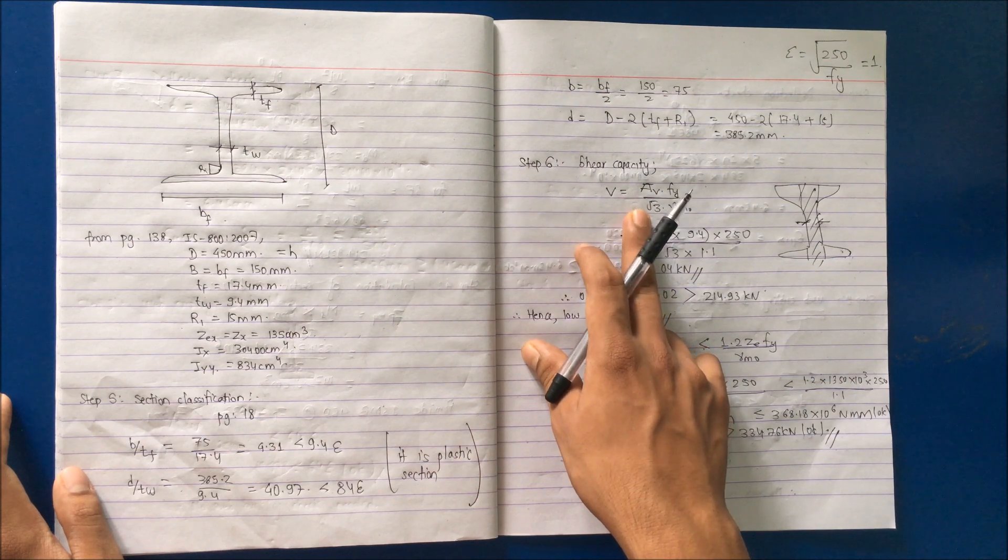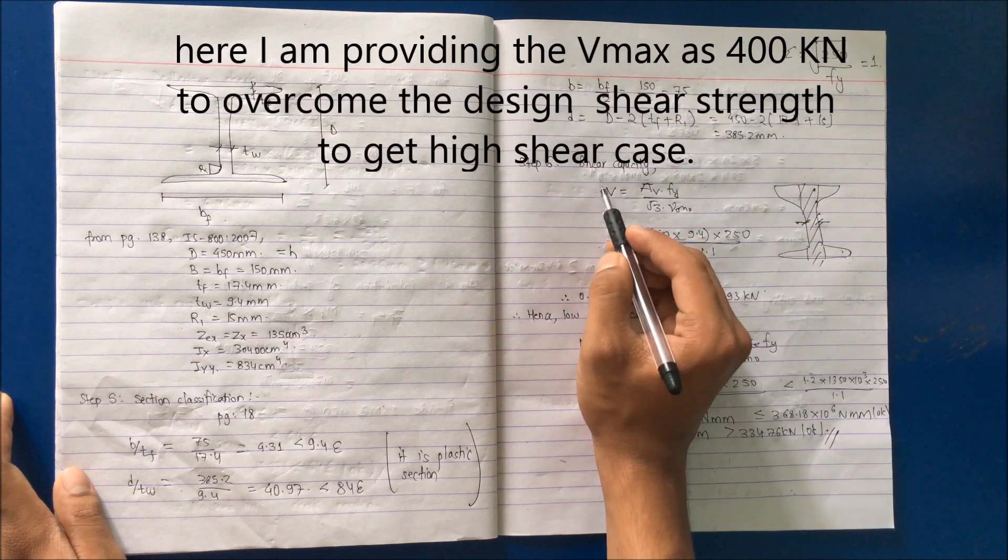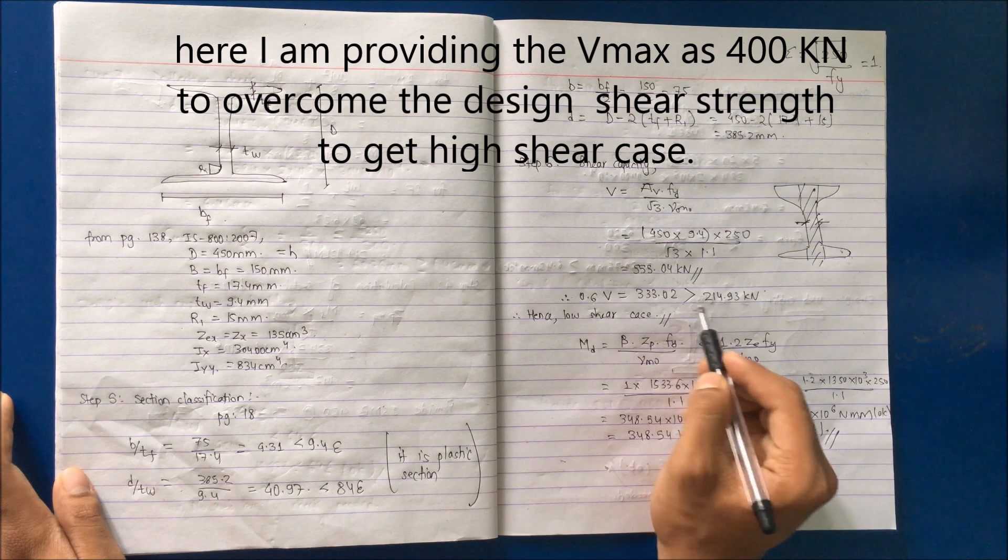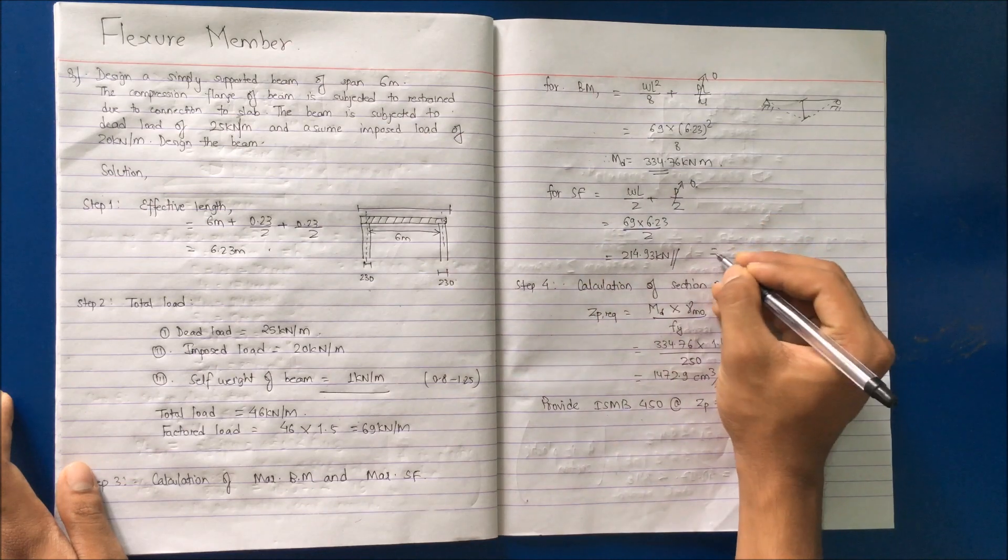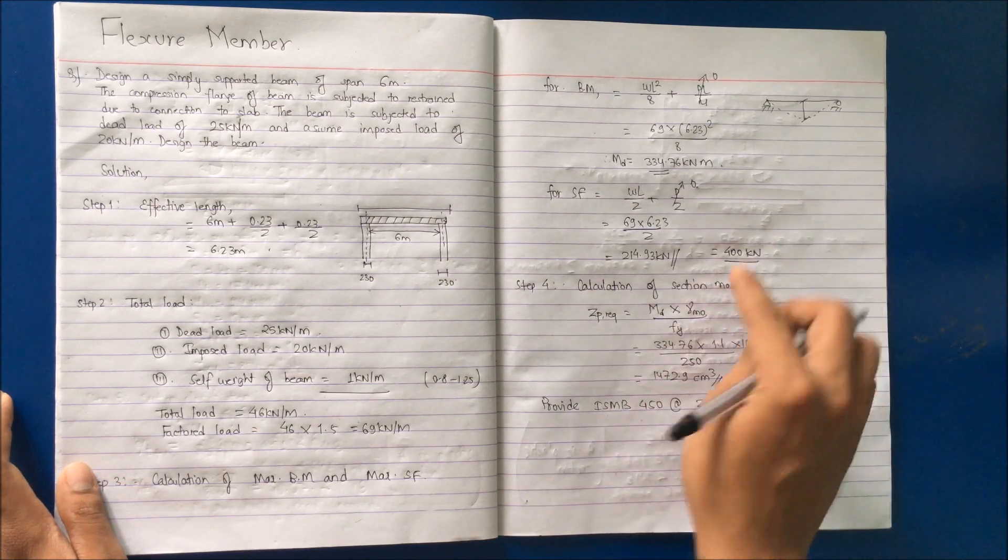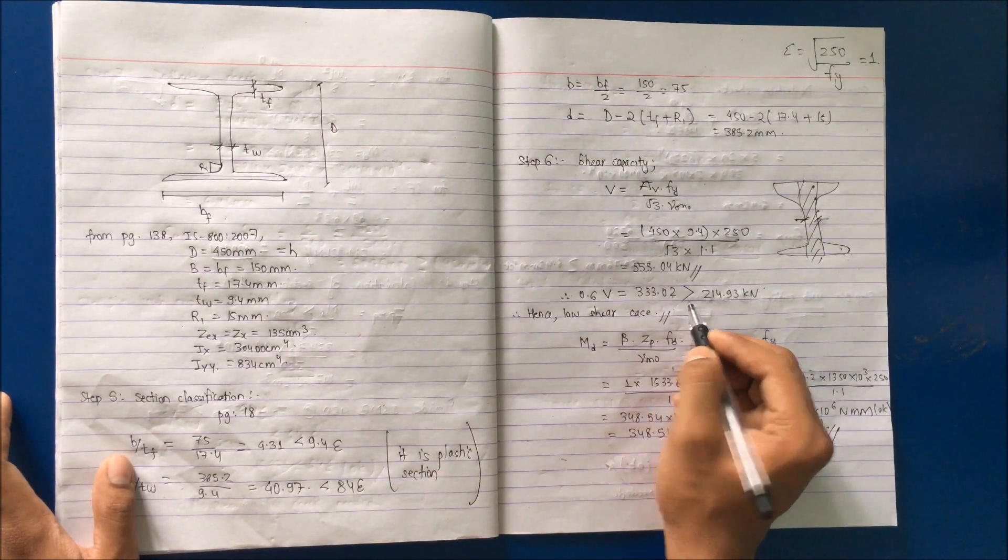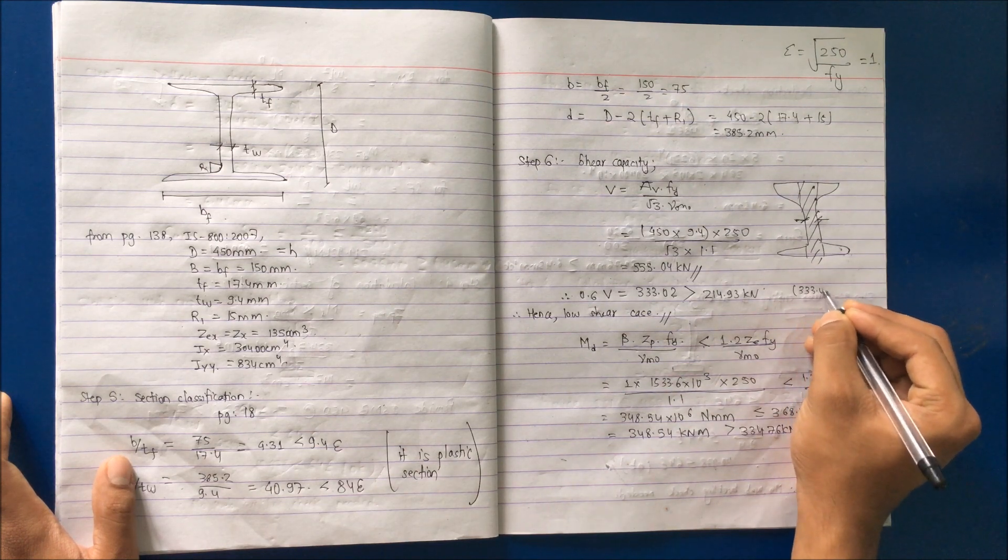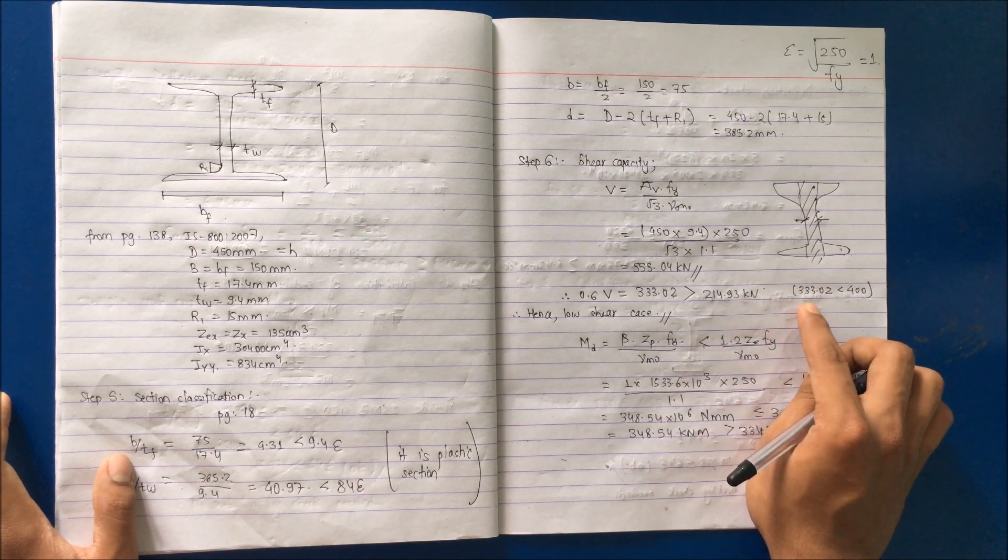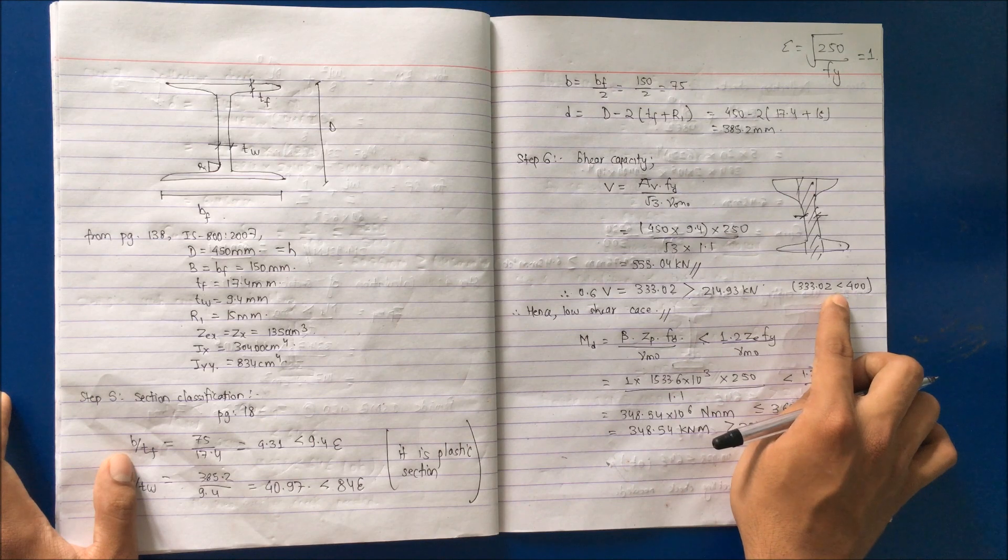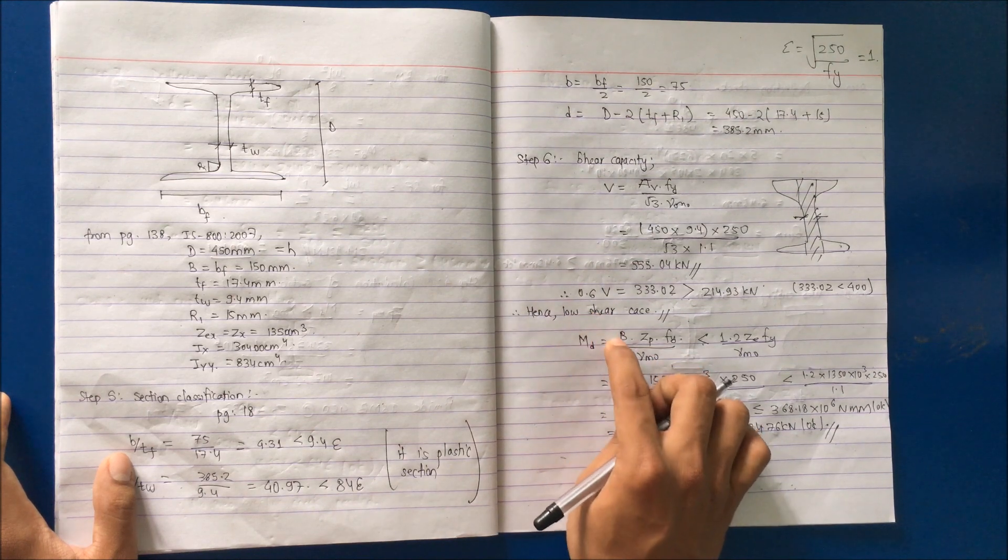In case of step 6, we will find shear force. What will happen is that 0.6 times the shear strength or shear capacity of this section will be less than the shear force calculated. For example, if it is 400 kN due to some point load, then the case will not be satisfied here. That is, 333.02 will not be greater than 400. The design strength shear capacity is less than maximum shear capacity that the section can face, so it will be a high shear case.